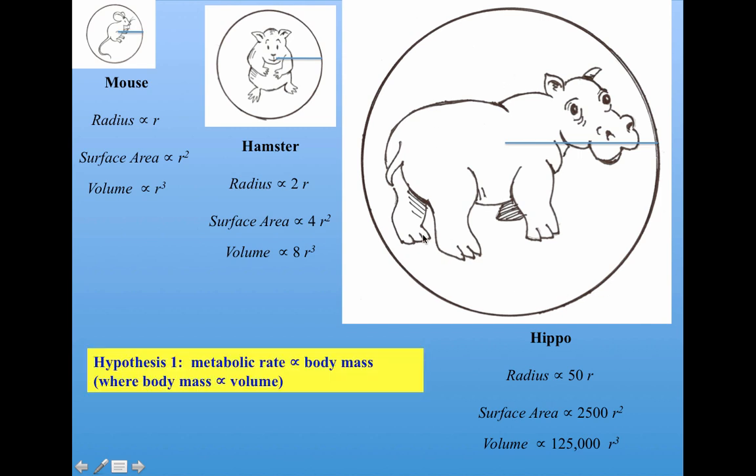So our simplest hypothesis might be that metabolic rate, which is the amount of energy or heat given off by the organism, scales with body mass directly, that it's directly proportional to body mass, where body mass is proportional to volume. Well, there's a problem.